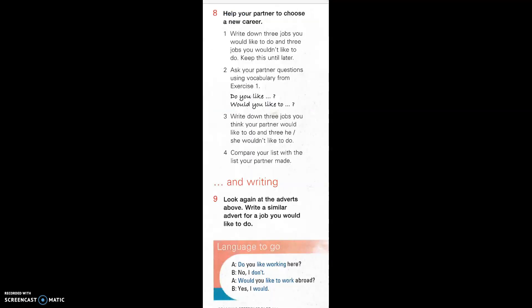Here's a nice activity to practise all the elements of this lesson. Start by getting everybody to write down two jobs they would like to do and two they wouldn't, and keep it secret. Then choose two students — one interviews the other. You might want to demonstrate this yourself first. Ask one student questions while everyone else listens and thinks what job that student should do. At the end, ask the class what they think, and then ask the student if that matches their list. Then nominate two more students and start noting errors for correction after the activity.